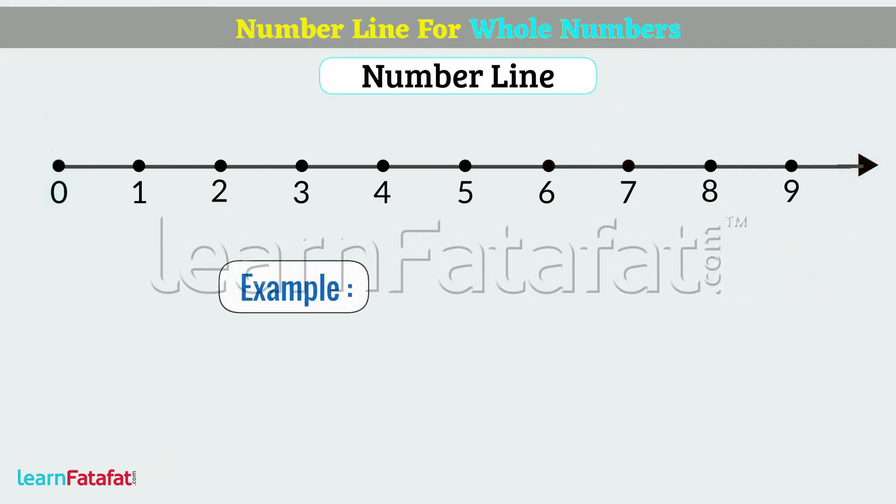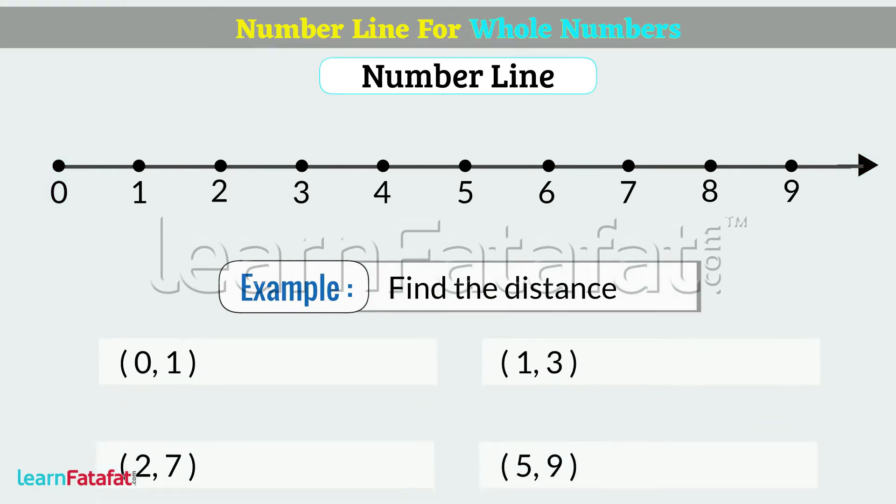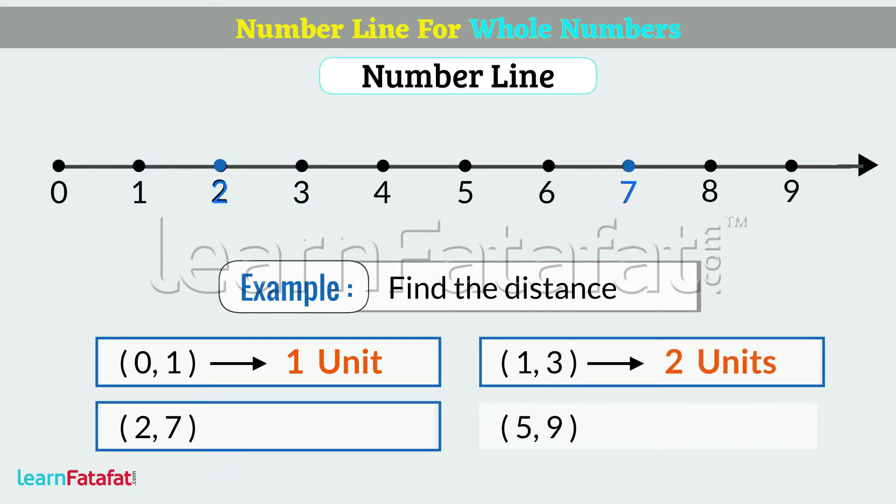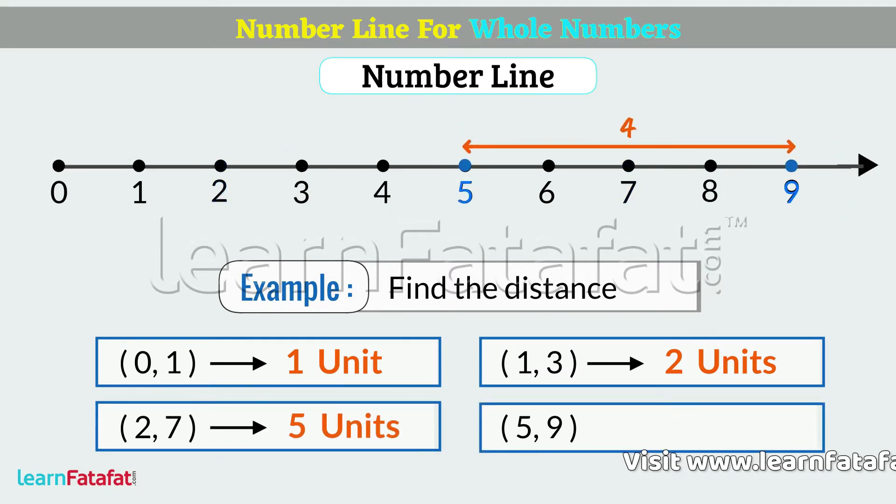Example: find the distance between given pairs of numbers. 0 to 1, distance is 1 unit. 1 to 3, 2 units. 2 to 7, 5 units. 5 to 9, 4 units.